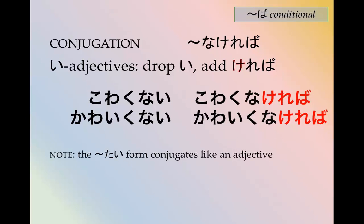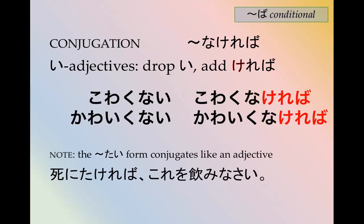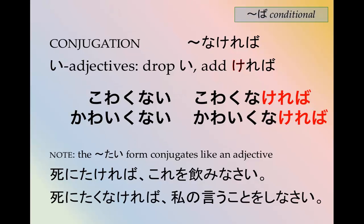The たい form also conjugates like an い adjective. So if you want to say 'if you want to die' — 死にたければ、これを飲みなさい — drink this. And the negative: 死にたくなければ、私の言うことをしなさい — if you don't want to die, do what I say.